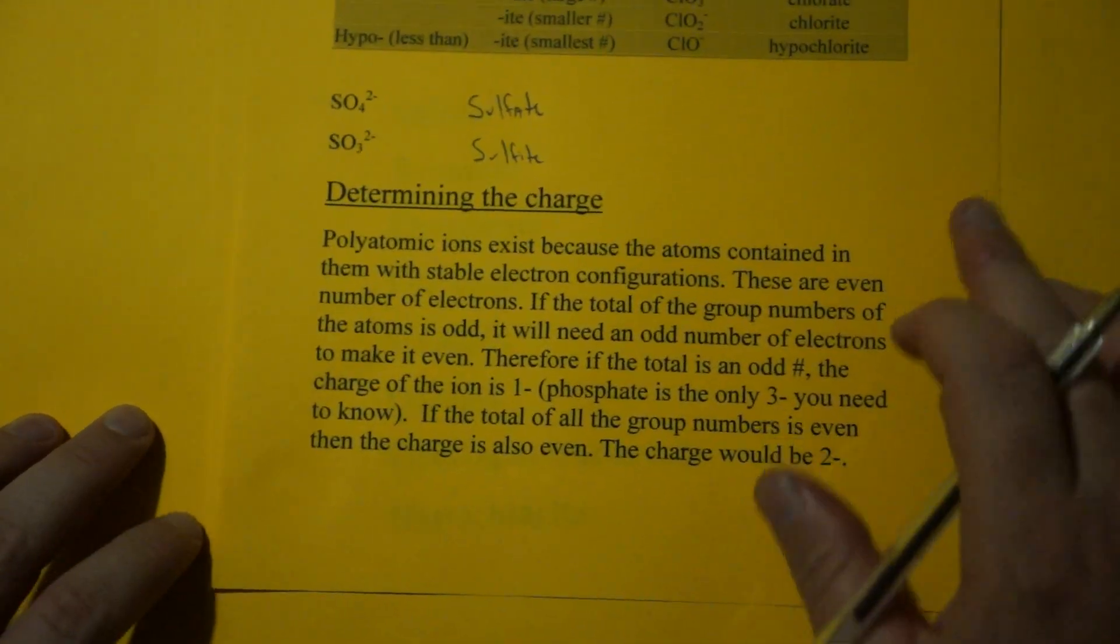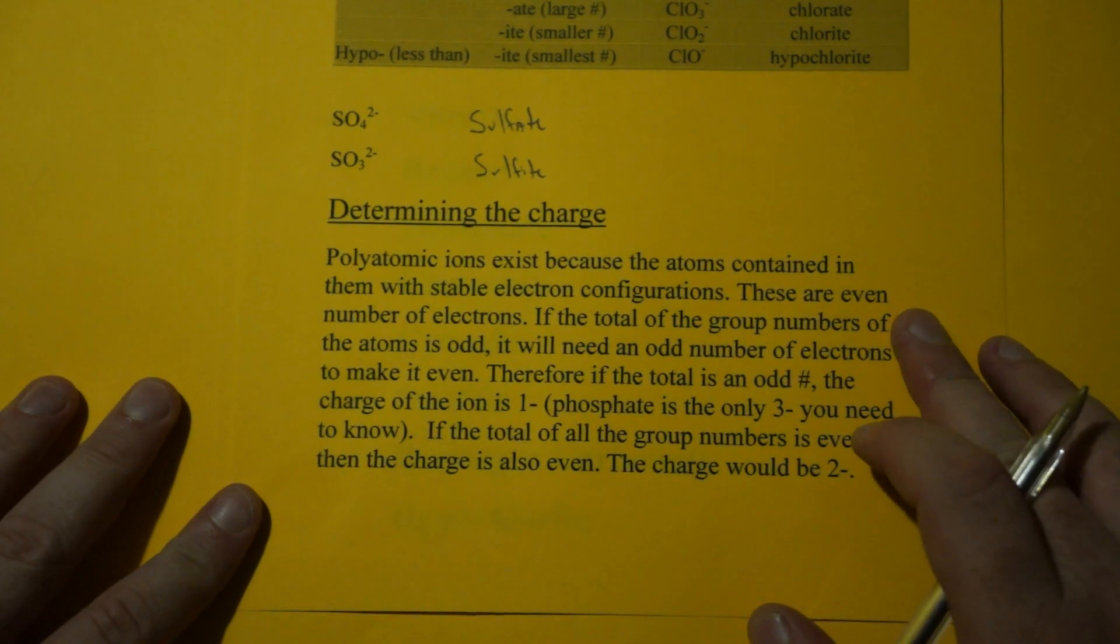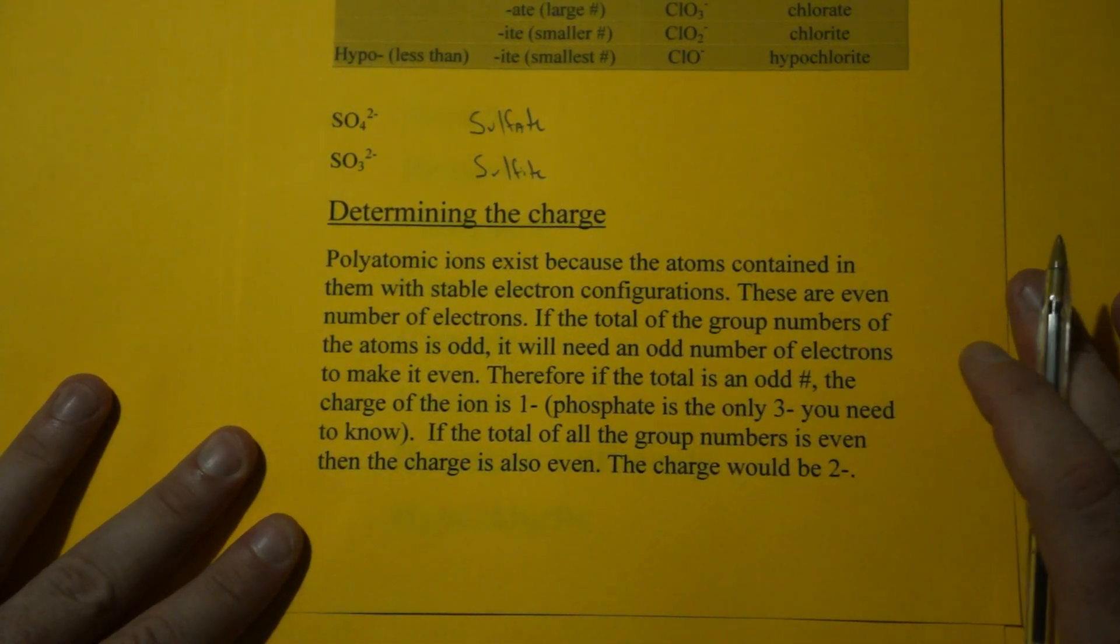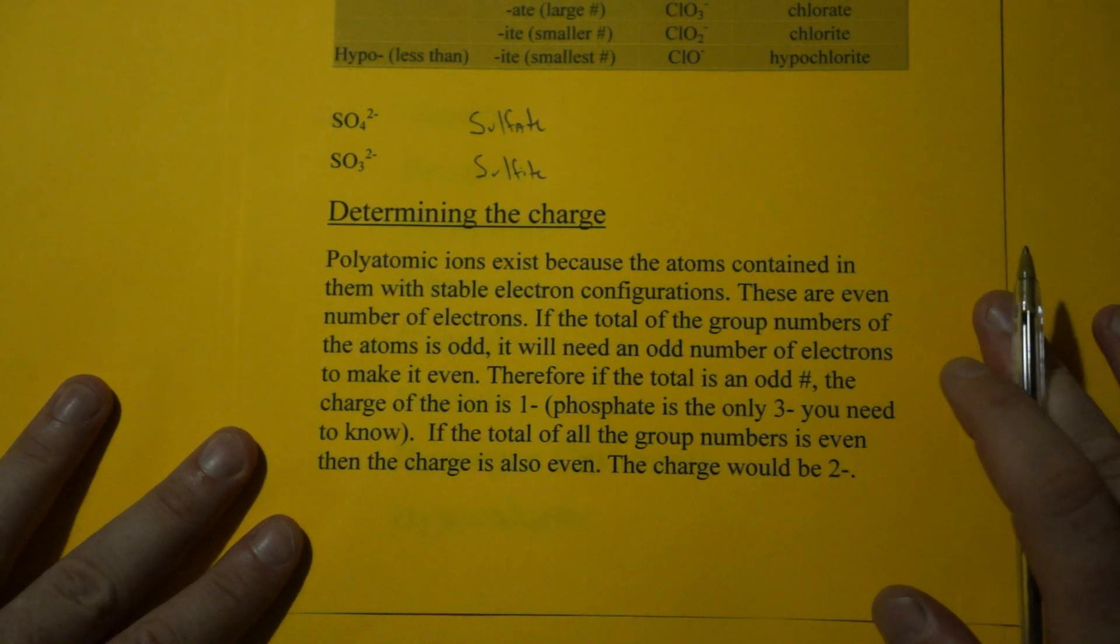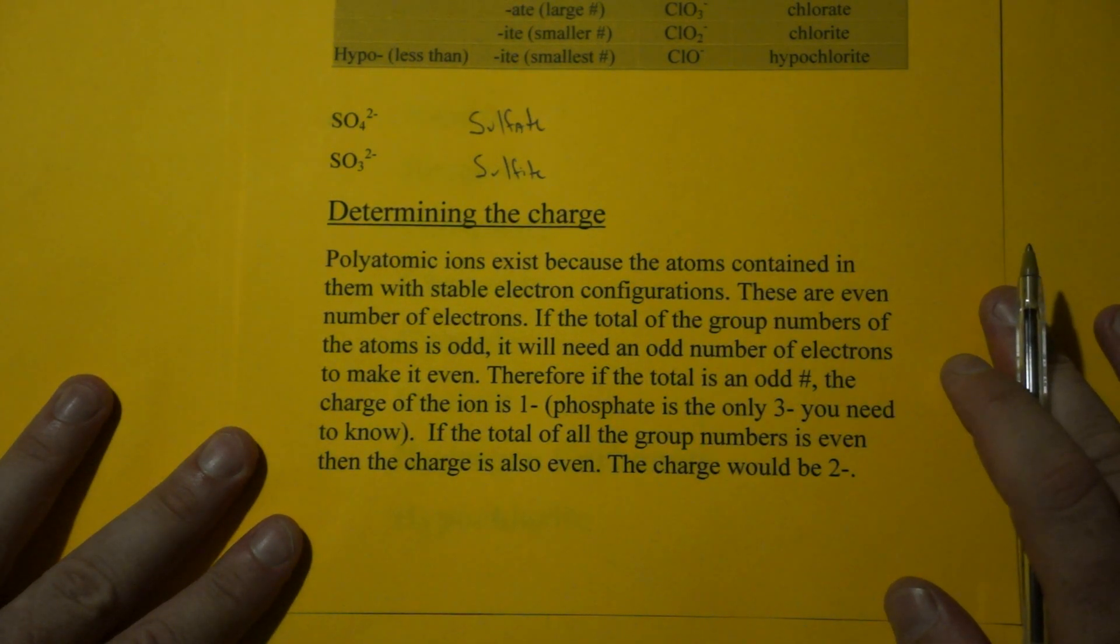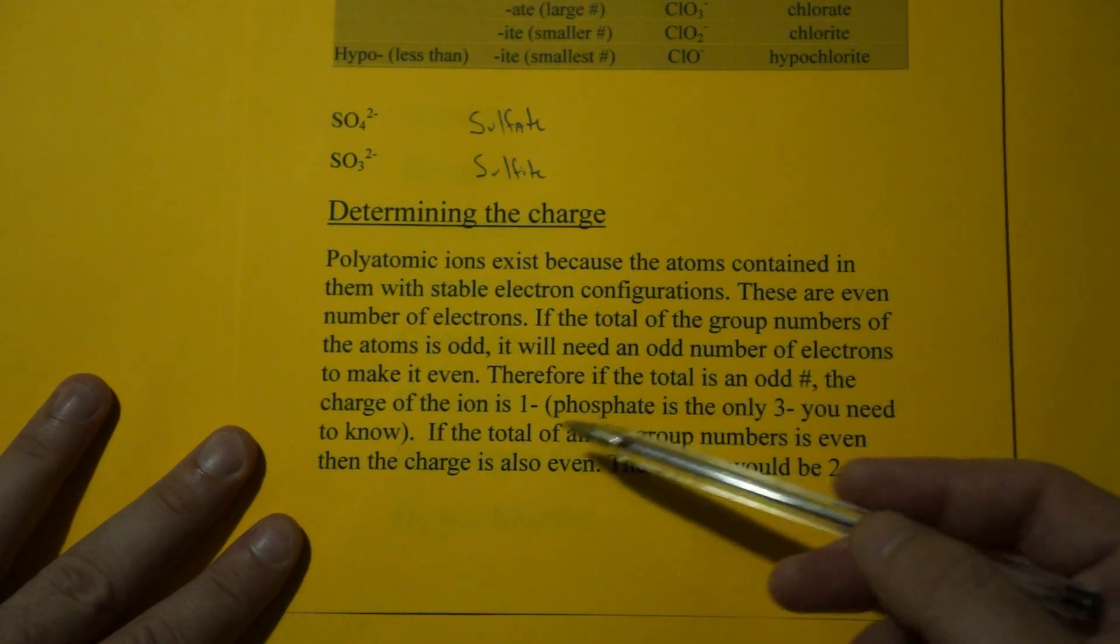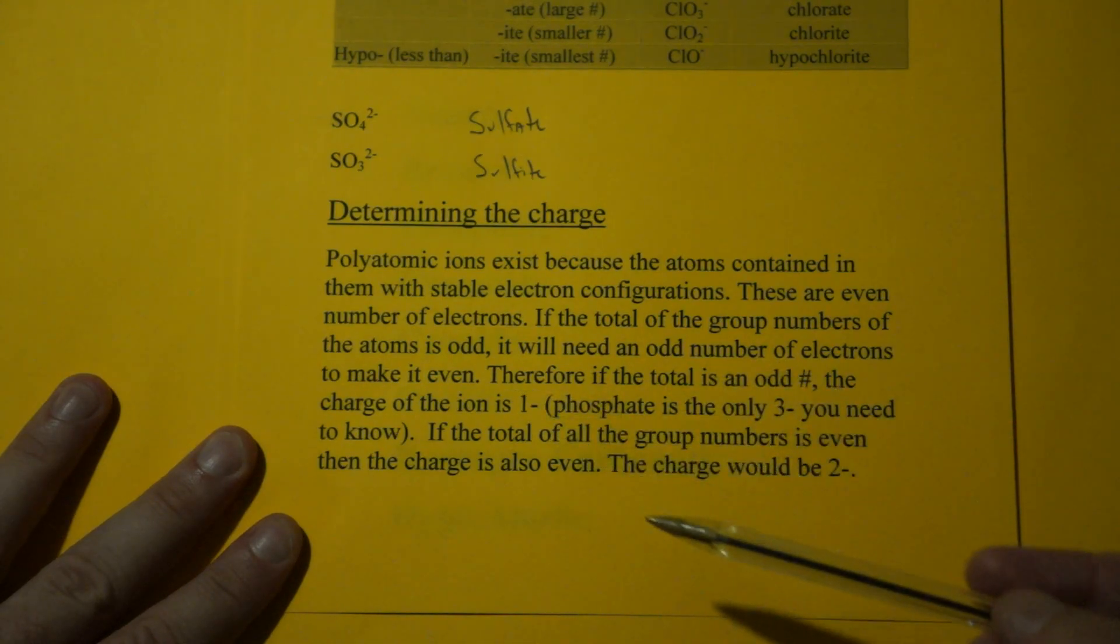Now, a lot of students have difficulty with charge, and it took me a little while to realize this. Polyatomic ions exist because atoms contained in them have stable electron configurations. These are even numbers of electrons, so all the atoms when they form a polyatomic ion have an even number total. So if the total of the group numbers of the atoms is odd, you need to add an odd number of electrons to make it even.